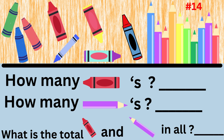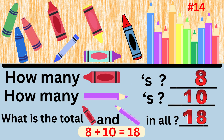Word problem number fourteen asks: how many crayons are there, how many color pencils are there, and how many crayons and color pencils are there in all? The answer is there are eight crayons and ten color pencils, so there are a total of 18 crayons and color pencils in all. The number sentence is 8 plus 10 equals 18.